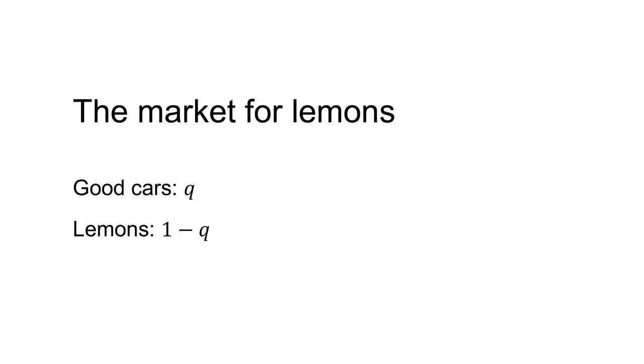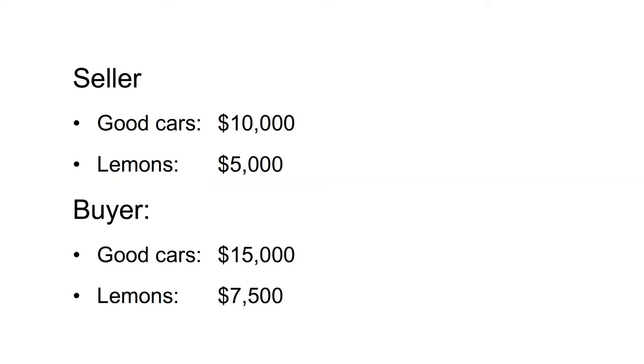A car is good with probability Q and a lemon with probability 1-Q. To the seller, good cars are worth $10,000 and lemons $5,000. To potential buyers, good cars are worth $15,000 and lemons $7,500.